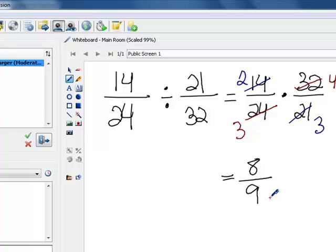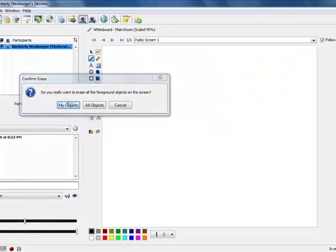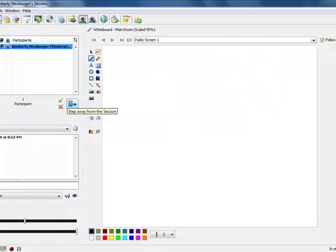Those steps we just did of flipping your second fraction over and switching to multiply, and then following the process for multiplication is exactly what we're going to do with rational expressions. So let's take a look at a problem with rational expressions.